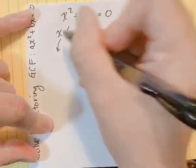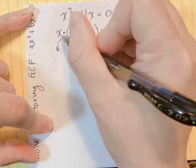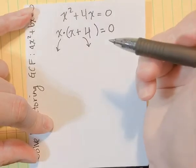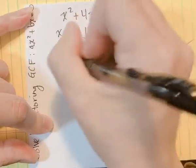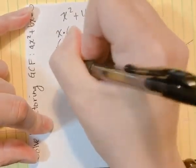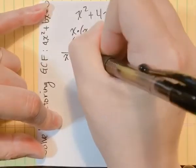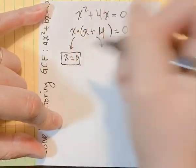It says that if two things multiply to give you zero, then each of them must be zero, or one of them has to be zero. So X could be zero, which potentially gives us one of the solutions: X equals zero.